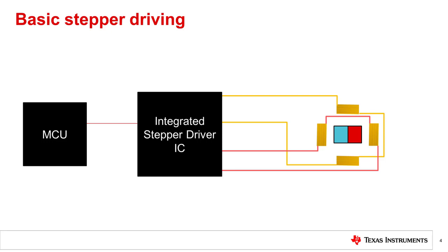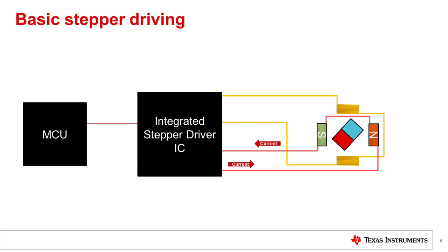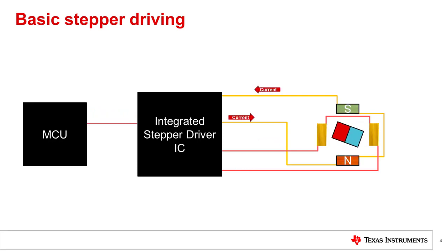Integrated stepper drivers control rotor position by energizing the stepper windings in a particular sequence. In this example, the microcontroller sends a pulse to the stepper driver to indicate that the stepper rotor should move to the next position. When the driver receives the stepper pulse, the driver energizes one of the phases in the sequence. When the driver receives the next pulse, the driver energizes the next phase so the rotor can continue moving.